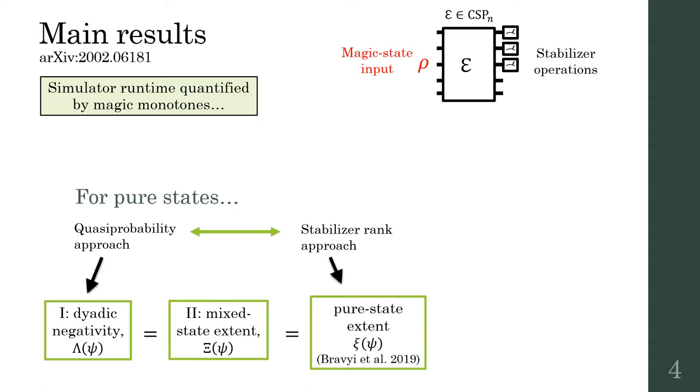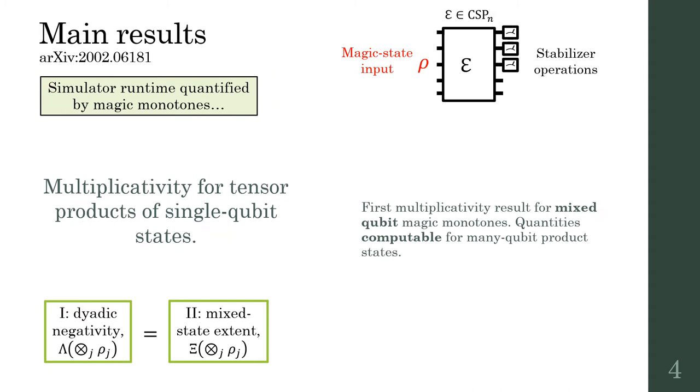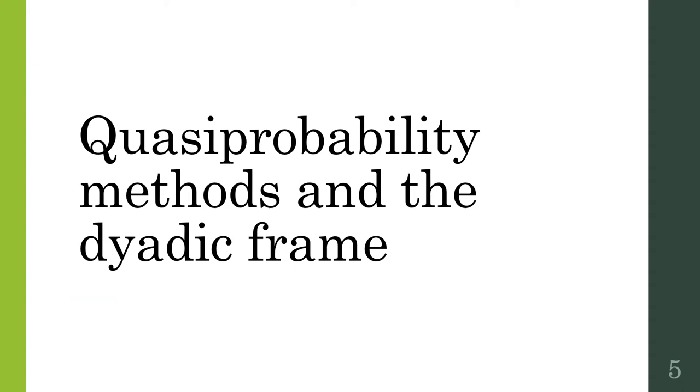For pure states, both monotones equal the pure state extent, linking the quasi-probability and stabilizer rank pictures. The monotones are equal and multiplicative for tensor products of single-qubit states, and we give a complete analytic characterization for the single-qubit case, so the monotones are efficiently computable for tensor product states.